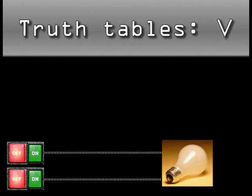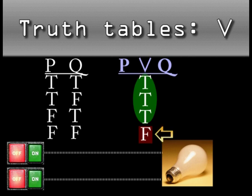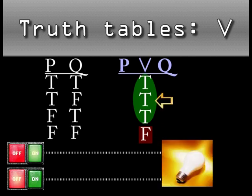Inclusive OR is true when either P, Q, or both P and Q are true. The light goes on when at least one switch is flipped.